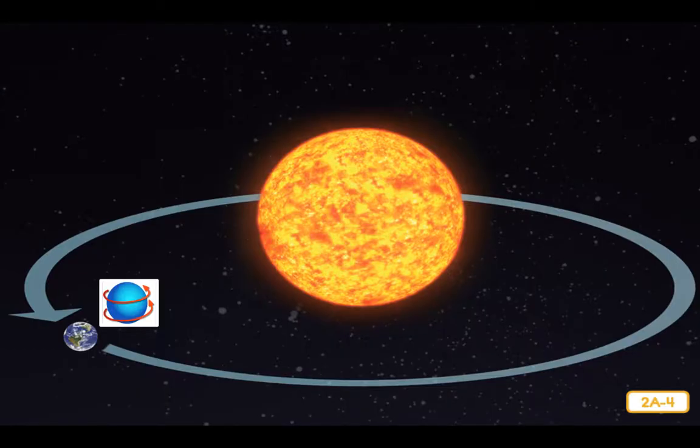In space, there are large objects like the sun and there are smaller objects like the Earth and moon. All objects in space actually pull on all other objects, but larger objects pull harder than smaller objects. The force that causes objects to pull on each other is called gravity.